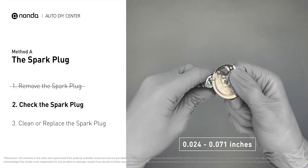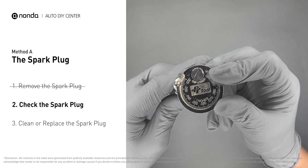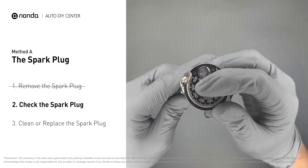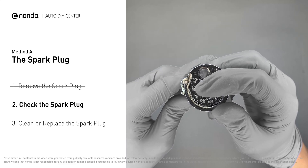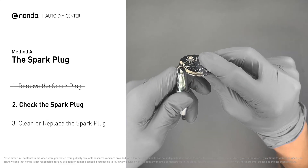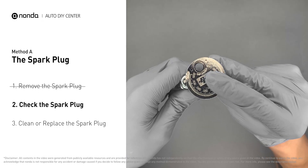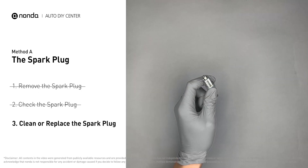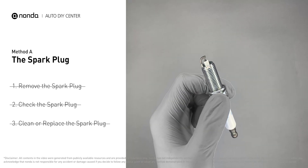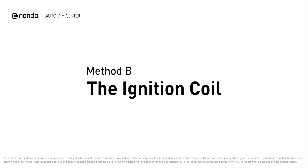Normally, the spacing should be between 0.024 to 0.071 inches. As you can see, the spacing of this spark plug is a bit low. Use the spark plug gapper to increase the spacing back to the normal range. But if you see obvious damage on the spark plug, simply replace it with a new one. Method B: the ignition coil.